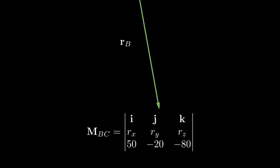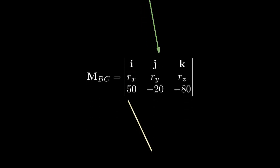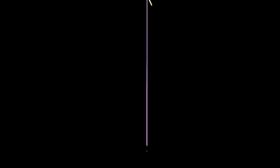Finally, we'll calculate the moment about line CA. Again, we need a position vector, this time from point C, and perform the cross product to find our final moment.